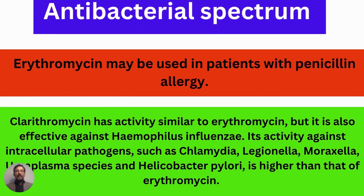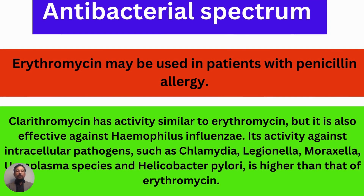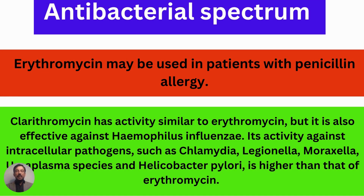Regarding the antibacterial spectrum: erythromycin may be used in patients with penicillin allergy as an alternative medicine. Clarithromycin has activity similar to erythromycin, but is also effective against Haemophilus influenzae. Its activity against intracellular pathogens such as Chlamydia, Legionella, Moraxella, Ureaplasma species, and Helicobacter pylori is higher than that of erythromycin.